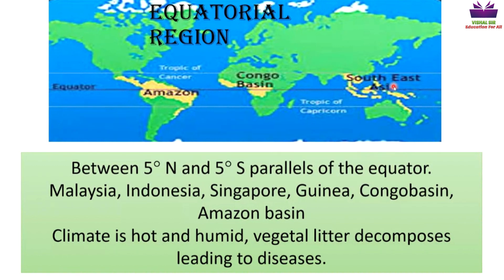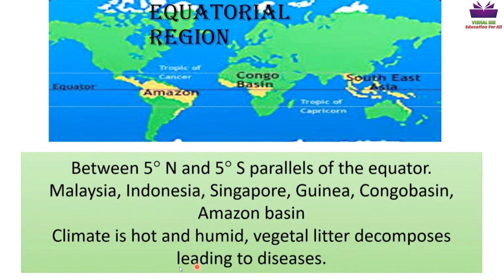The climate in the equatorial region is hot and humid. The heat is so intense that vegetal litter decomposes rapidly, meaning the vegetation decomposes due to the strong heat, which leads to the spread of many diseases.